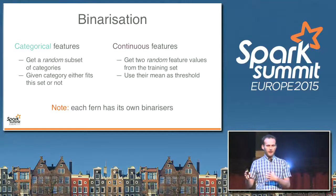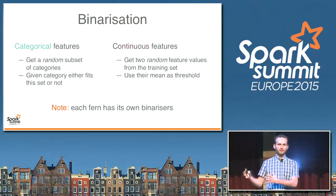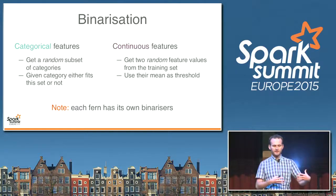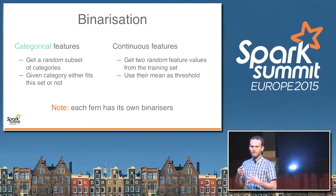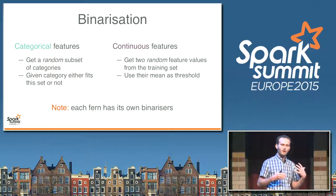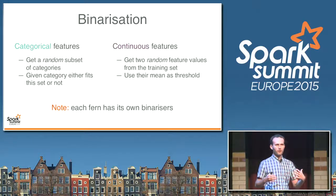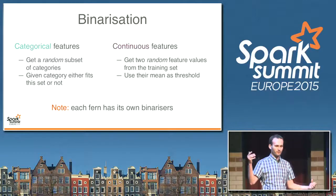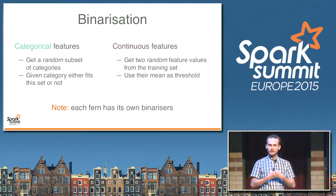The next thing I would like to talk about is binarization. As Piotr said, random ferns work with binary features, whereas in real-world scenarios we usually use categorical features like color or gender, or continuous features like average income. How do we transform those into binary features? We are using very simple methods. For categorical features, we randomly sample a subset of possible feature values and say those which fall in that subset are true, the others are false. For continuous features, we randomly sample two feature values, take their mean as a threshold, and again, those which are above the threshold are true, the others are false. That seems too naive to work, but it actually does.